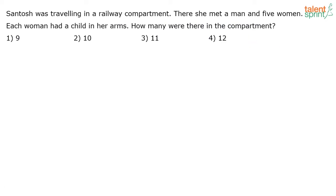We have to find the total number of persons. This is a simple puzzle. Who all are there in the compartment? Santosh who's traveling, the man she met, and five women. What's the total? Santosh is 1, the man is 2, and five women make 7.